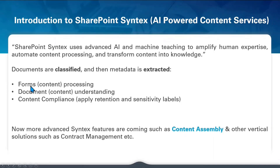There are two main features to extract data, and that's forms processing. The concept of forms processing uses machine learning, which is part of AI Builder, to identify and extract key-value pairs and table data from structured or semi-structured documents. As the name says, it's good for forms or invoices where there's reliable structured data and you're targeting a particular section on a particular piece of the form.